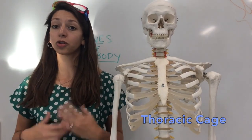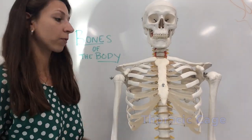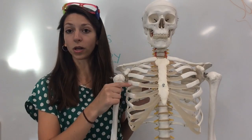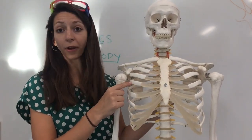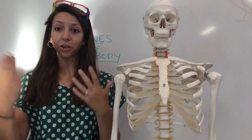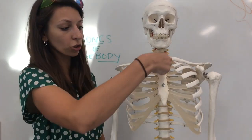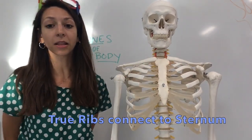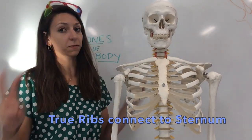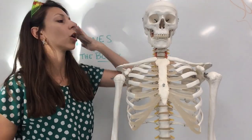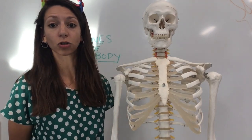Let's talk about our thoracic cage, which includes 25 bones. The ribs — there are 12 pairs for a total of 24 — with one set of ribs attached to each thoracic vertebra. The first seven pairs of ribs are called true ribs because they directly connect to our sternum. The last five pairs are called false ribs because they don't reach the sternum directly, though some are connected via cartilage.